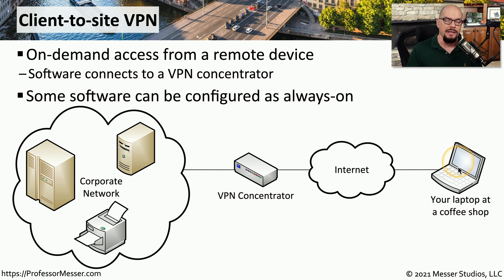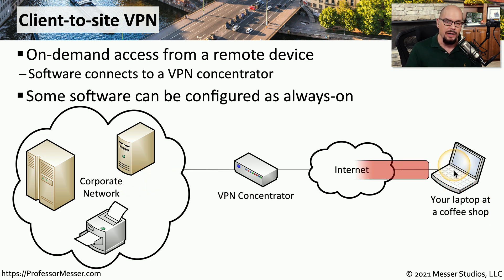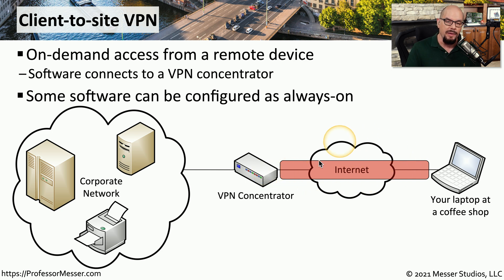This software is commonly configured as on-demand, so you would turn it on or off as needed, or it may be configured to be always on. If this laptop is outside of the building, it will always have a VPN connection back to corporate. When you start this software, it will encrypt all of the data that you send between your workstation and the VPN concentrator. Anyone in the middle who intercepts this traffic would not be able to see or understand anything being sent to the corporate office.